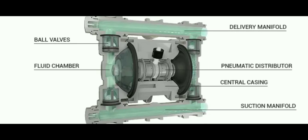Here are the parts of a diaphragm pump. First we have a fluid chamber for fluid flow, and we have a flexible diaphragm for fluid flow, and we have a pneumatic distributor at the middle which helps to operate the flexible diaphragm, and we have a central casing.